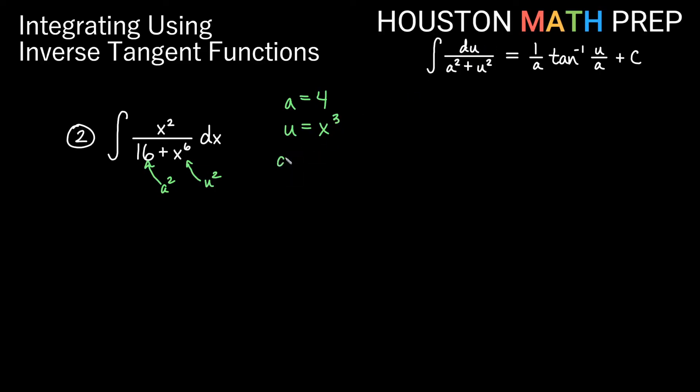We need a du. What is the derivative of this x cubed? du is 3x squared dx. Notice what we have here though, we just have regular old x squared dx. So dividing by 3 on both sides, I would get 1 third du is actually the replacement for x squared dx. So this up here will be 1 third du. We'll go ahead and bump that 1 third out as constant multiple. Remember that's not part of our 1 over a, that's just constant multiple when we did our substitution.